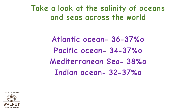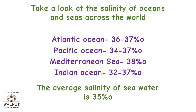Take a look at the salinity of oceans and seas across the world. Atlantic Ocean: 36 to 37 per 1000. Pacific Ocean: 34 to 37 per 1000. Mediterranean Sea: 38 per 1000. Indian Ocean: 32 to 37 per 1000. The average salinity of seawater is 35 per 1000.